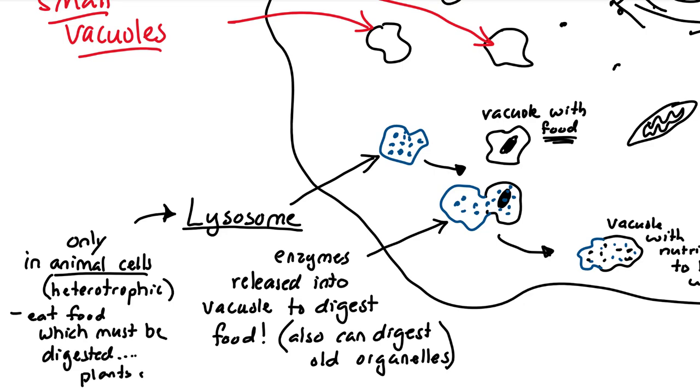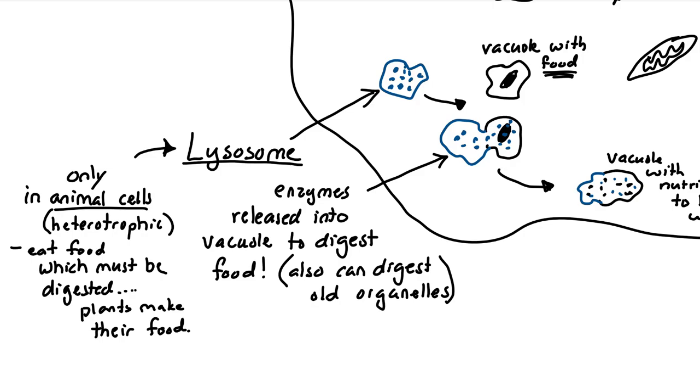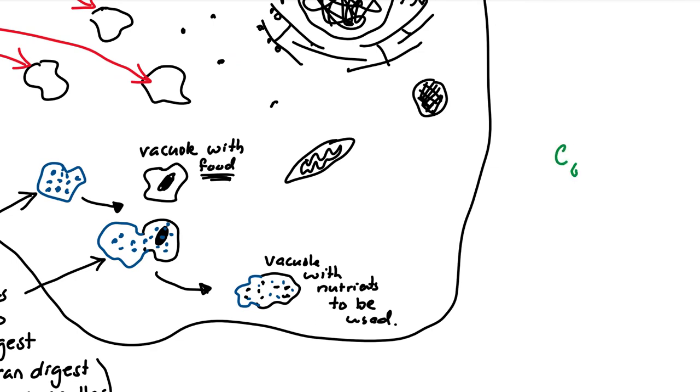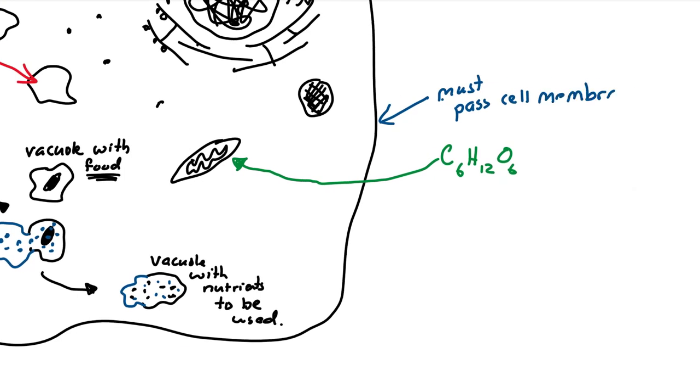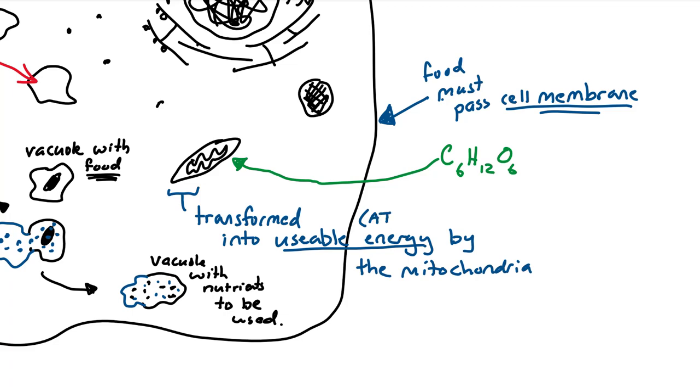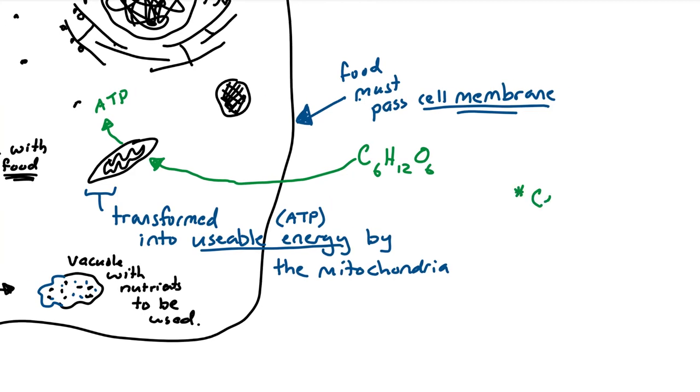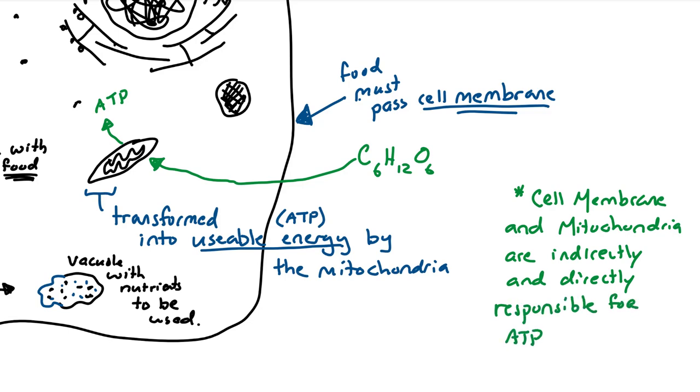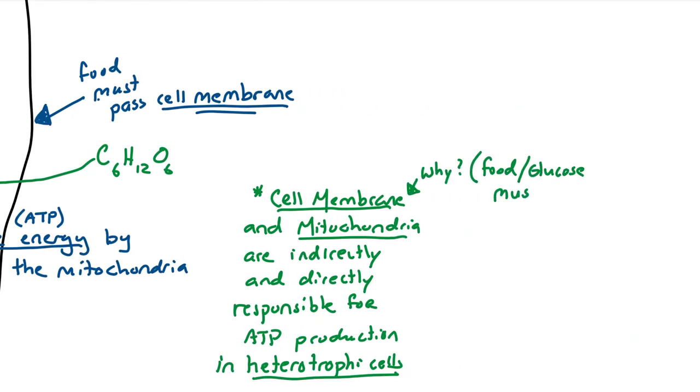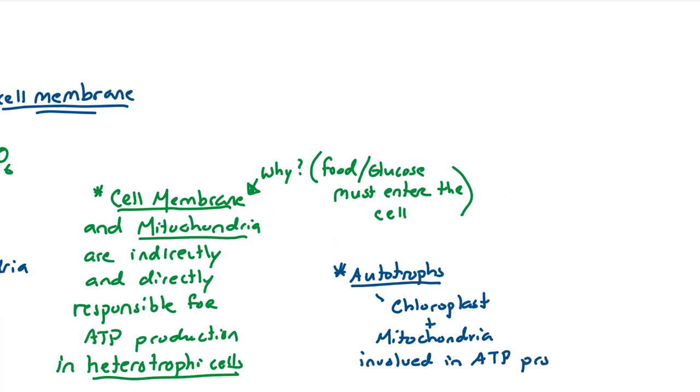It brings us to another idea. Glucose is not made in an animal cell. Animal cells must eat or consume glucose. Once eaten or ingested, it has to pass, sorry, in order to be ingested, it must pass the cell membrane. And once it does, it goes to the mitochondria to be transformed into usable energy, ATP. So, the cell membrane does kind of play a part in energy production. Without the cell membrane letting glucose in, there would be no glucose in an animal cell. So, the cell membrane and the mitochondria are indirectly and directly responsible for producing ATP in heterotrophs. Because glucose must enter the cell, cell membrane involvement, and the mitochondria rips out the energy and makes it ATP.